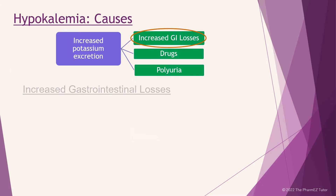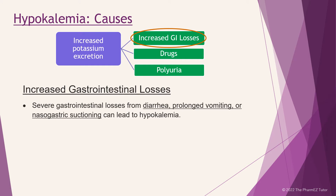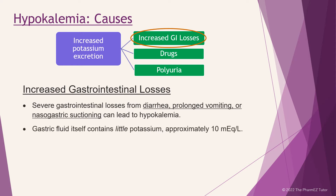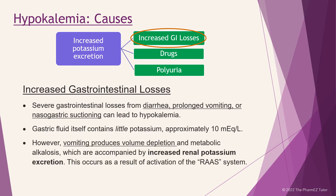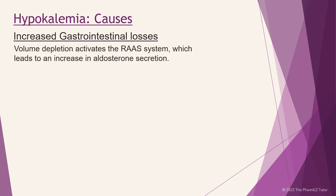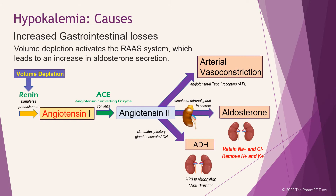Let's first talk about increased GI losses. Severe gastrointestinal losses from diarrhea, prolonged vomiting, or nasogastric suctioning can lead to hypokalemia. Gastric fluid itself contains little potassium, approximately 10 MEQs per liter. However, vomiting produces volume depletion and metabolic alkalosis, which are accompanied by increased renal potassium excretion. This occurs as a result of activation of the RAS system. Volume depletion activates the RAS system, leading to increased aldosterone secretion, which in turn causes enhanced renal secretion of potassium in exchange for enhanced sodium reabsorption. Metabolic alkalosis also ensues due to loss of hydrogen ions in response to sodium reabsorption.